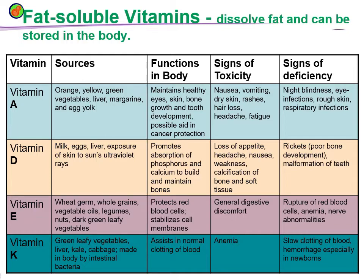Vitamin K can be obtained from green leafy vegetables — you should eat one bowl of vegetables before your meal so that your diet is proper. Vitamin K assists in the normal clotting of blood. Deficiency of vitamin K leads to anemia, which is a deficiency of blood, and slow clotting of blood.